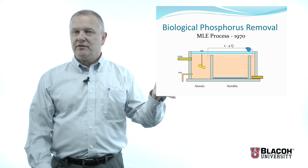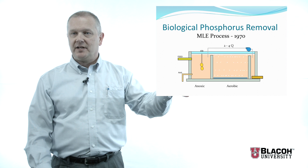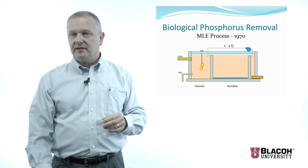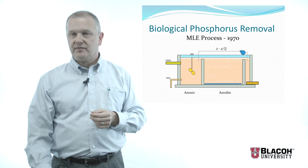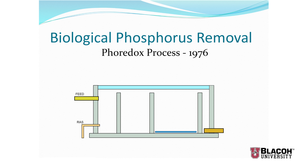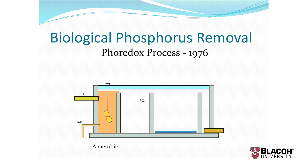If you remember from nitrogen removal, we talked about the MLE process. With a simple modification, we can also remove phosphorus. We add an anaerobic zone at the front of the treatment process — kept mixed but with no air added. The phosphate released by the microorganisms moves on into the anoxic zone along with the BOD.